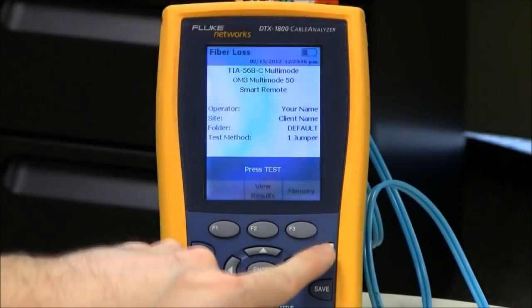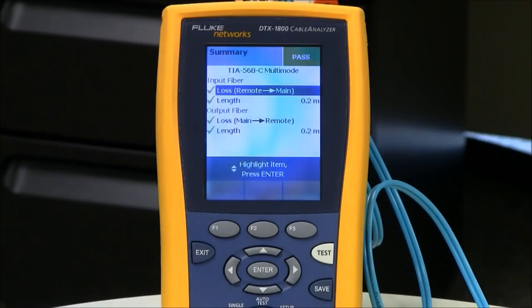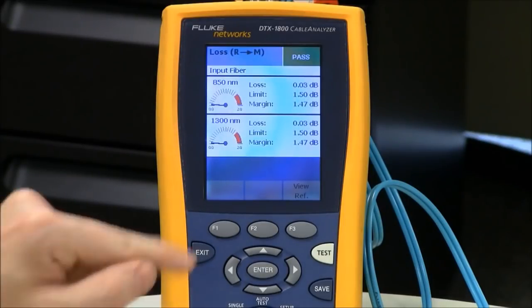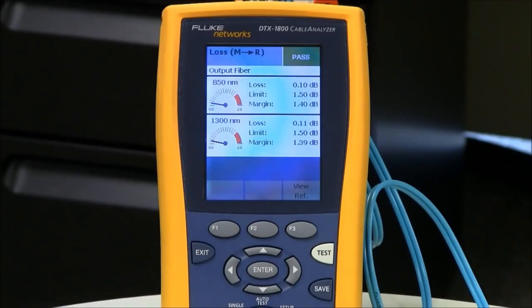Okay, so let's run the test. Remember, ideally, I want to be around about 0.1 dB, because these are multi-mode test reference cords. My input fiber is 0.03, 0.03, which is excellence. And my output fiber, 0.1 and 0.11. Now, that 0.11, that's okay, because we have a little bit of loss on the fiber as well to take into account when we added it to the input port. So, that 0.11 is actually okay. That's acceptable.